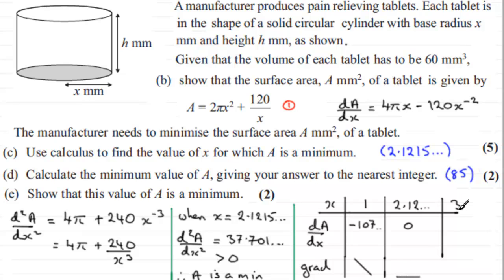And when we put x equals 3 into dA/dx, work that out, 4π times 3 minus 120 over 3 squared, you end up with a positive number. In fact, it turns out to be 24.3 and so on. So a positive number there, so you've got a positive gradient. You can see that your curve will be coming round like this, forming a minimum at this point here.